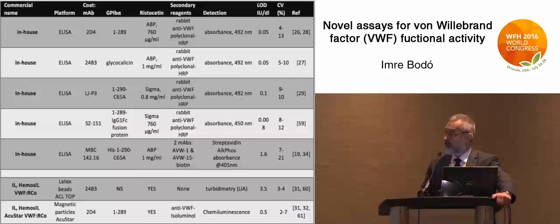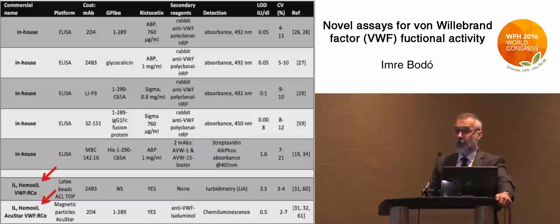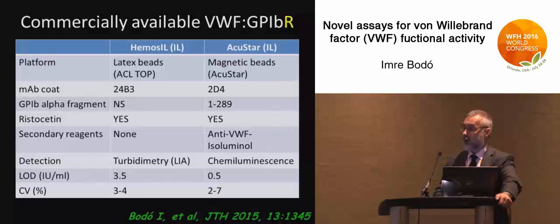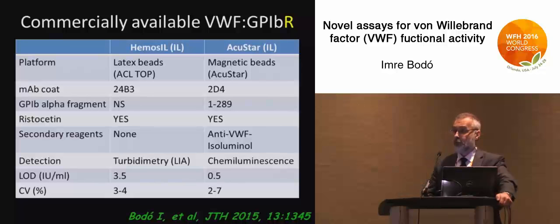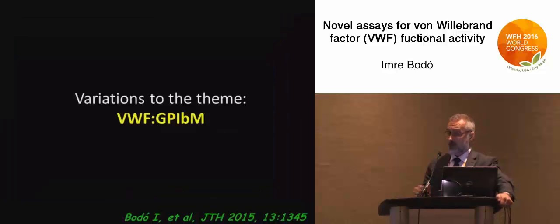Unfortunately, there is not one new assay but multiple versions. Each row on this busy slide represents a publication of one of these assays — those using ristocetin — and each column is an attribute that differs across them. Only two are commercially available, both marketed by IL: one for the ACL Top platform and the other for the ACL AcuStar. They use different codes to capture von Willebrand factor; both use ristocetin, but the concentration is not disclosed. These assays now show a spectacular limit of detection — they are very sensitive. The AcuStar goes below 1%, which was absolutely unheard of in the old days.